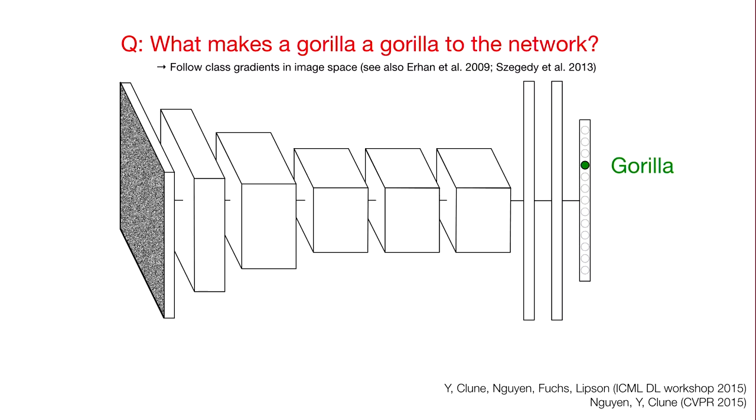To do that, we want the network to paint this gorilla for us. So what we do is we actually start it with not a real picture of a gorilla, but we start it with some noise—we put some pixely noise in. We do forward prop, and rather than saying gorilla, because that's not a gorilla, the network tends to say...